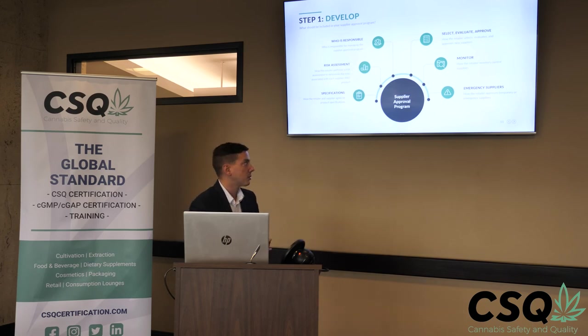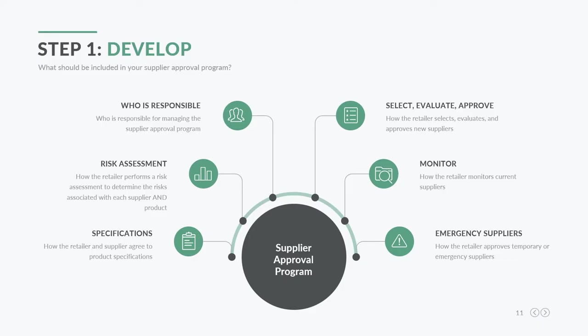Step one — develop — covers what should be included in your supplier approval program: who is responsible for managing the program, risk assessments (both supplier-specific and product-specific risk), and specifications — how the retailer and supplier agree to product specifications. For example, is it required that with each batch a COA is provided showing it's been tested to those specifications? Are they required to have a third-party audit?